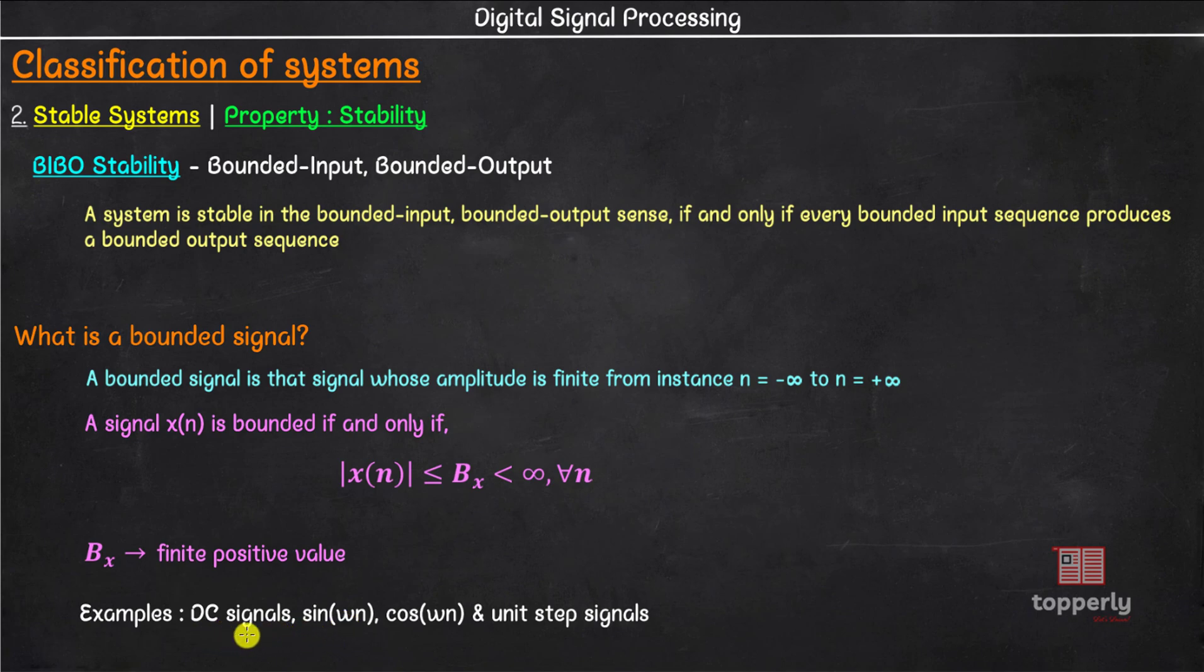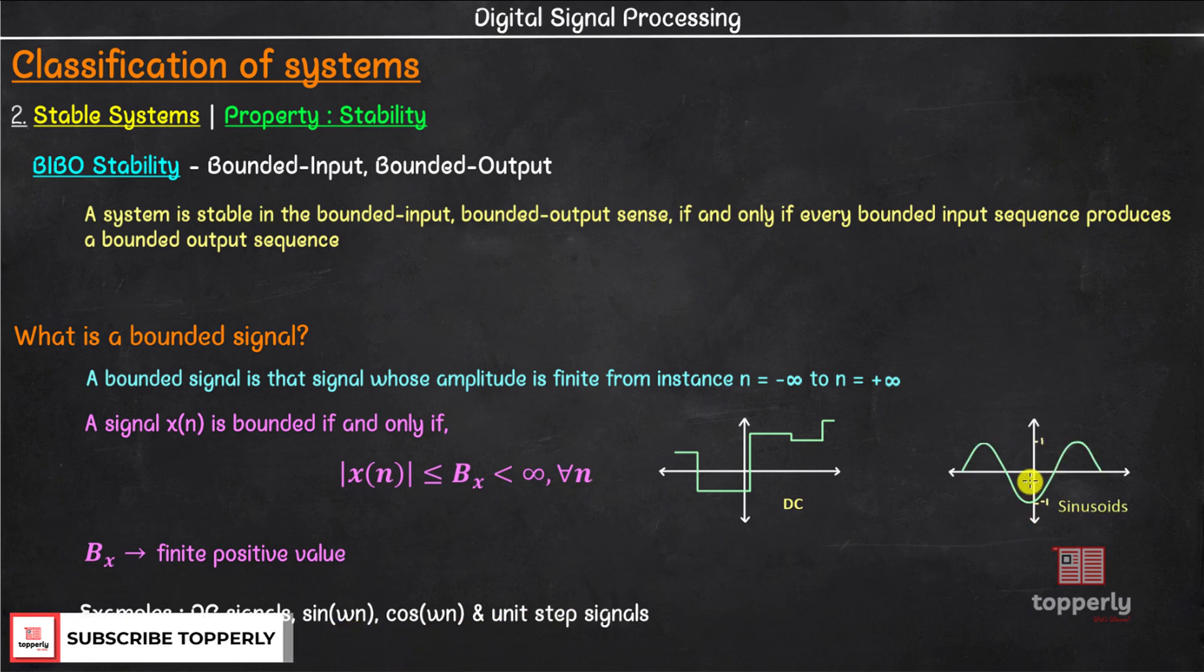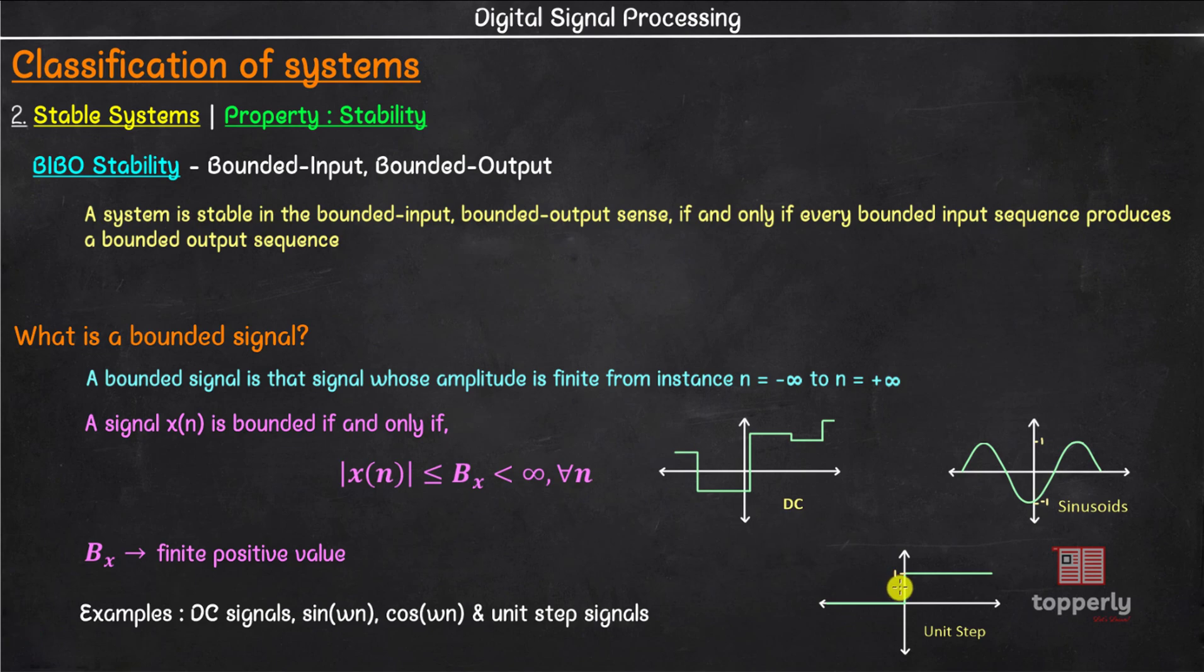For instance, the amplitude of a DC signal will always be some constant value for some range of n and all these amplitudes will be less than infinity. Similarly, the maximum amplitude for sine and cosine signals are +1 and -1. And for unit step the maximum amplitude is +1.